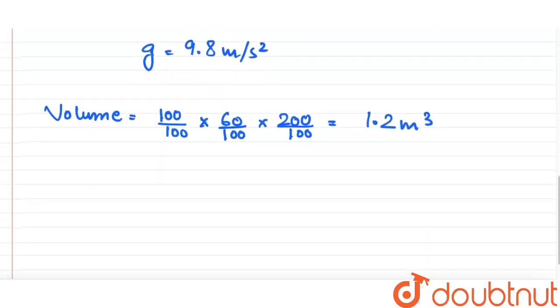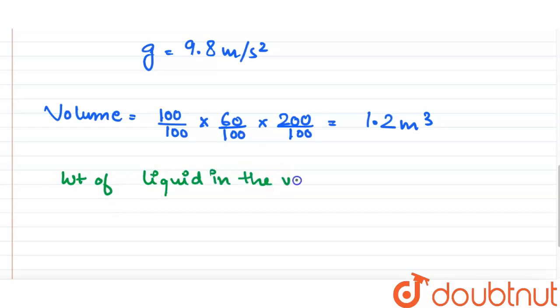So this is the area of the base of the vessel and this is the volume of the vessel. Now thrust at the bottom of the vessel will be equal to weight of the liquid in the vessel.